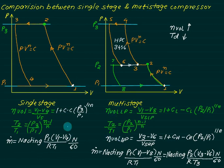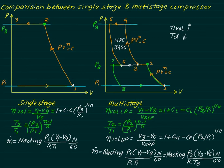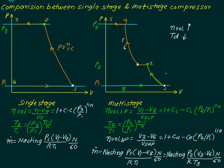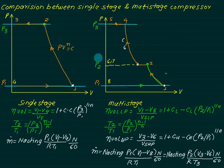There is one more advantage between the two. If we neglect clearance volume and the re-expansion process, and compare compression paths, the single-stage compressor would compress up to point two-dash, whereas multi-stage compression follows a different path. The area between these curves represents the extra work done in single-stage compression compared to multi-stage.